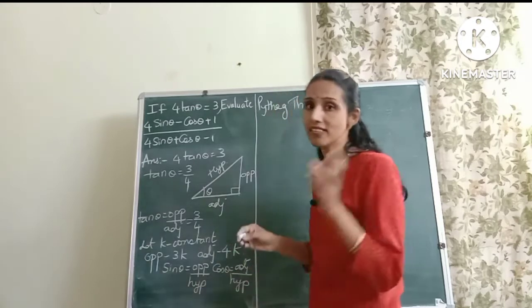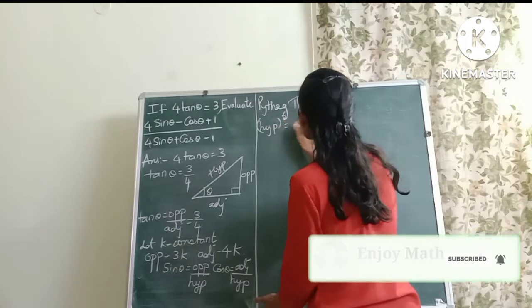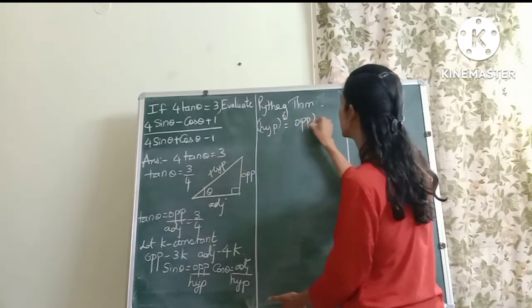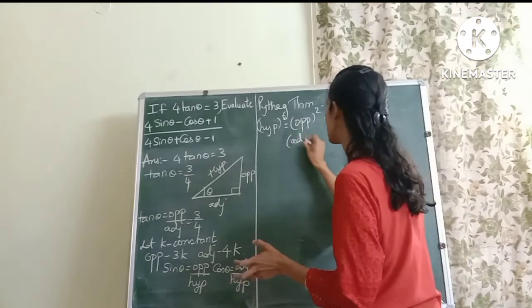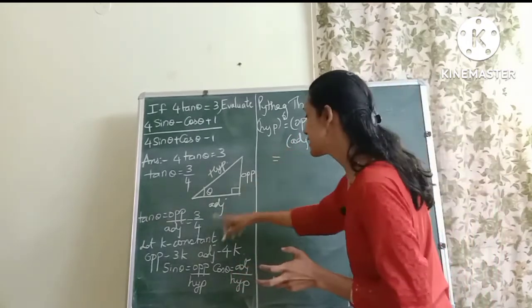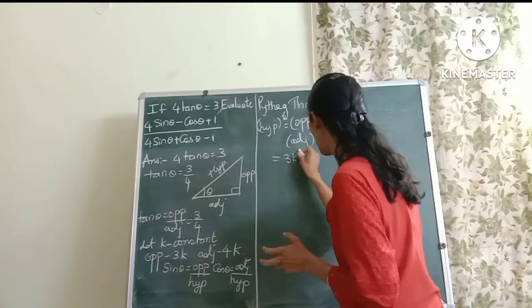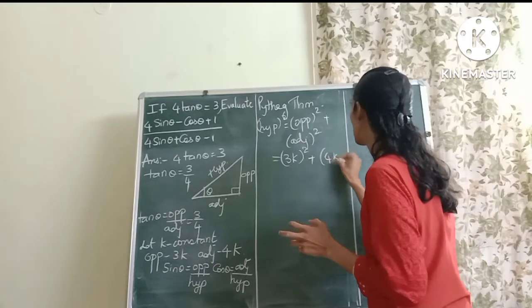Yes, the square of the hypotenuse is equal to the sum of the squares of the other two sides, which is here I've named it as opposite square, opposite side square, and adjacent side square. Okay, now what is the opposite side? I have taken it as 3k the whole square plus it will be 4k the whole square, right?